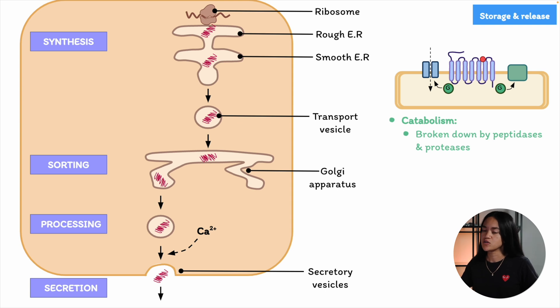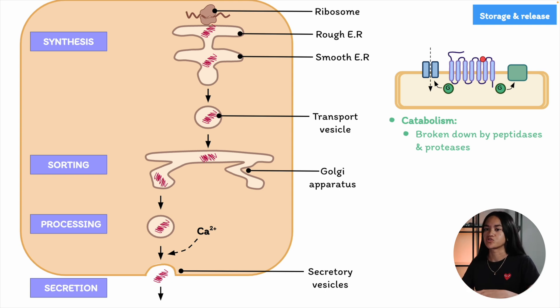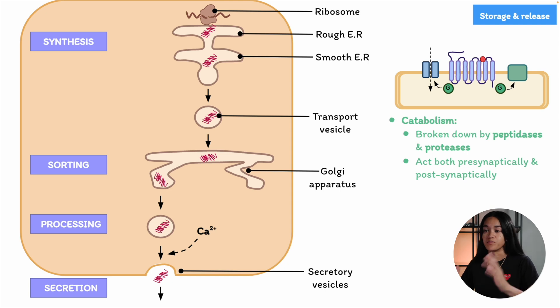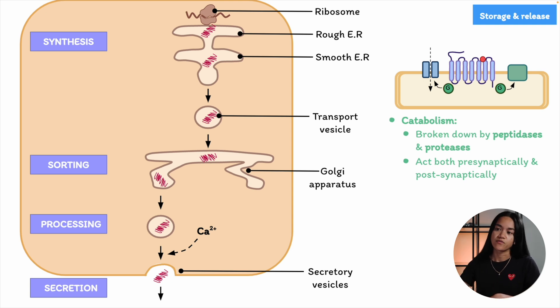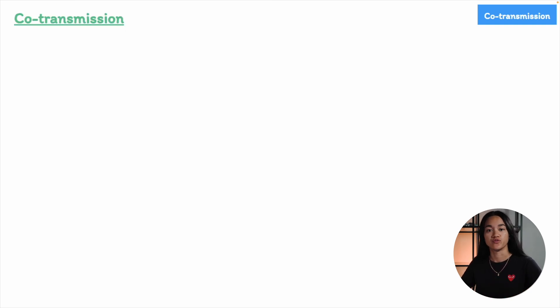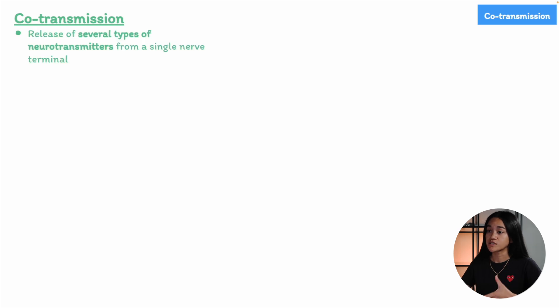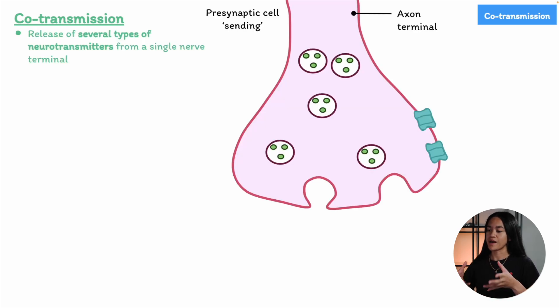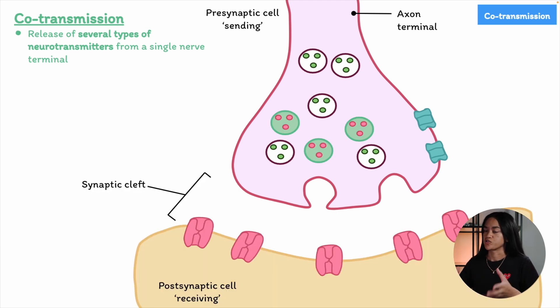Peptides play roles throughout the body with effects that can either be inhibitory or excitatory, acting both pre-synaptically and post-synaptically, and their influence can spread over short or long distances from the point of release. This leads us to how peptides often function as co-transmitters, working alongside other peptides or neurotransmitters. Co-transmission is when peptides are released alongside traditional neurotransmitters at synapses, and this is a powerful mechanism that allows the nervous system to fine-tune its responses to stimuli, whether it's regulating pain, digestion, or learning.